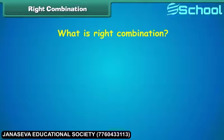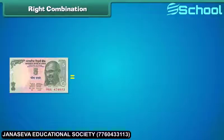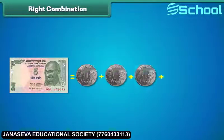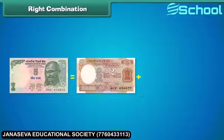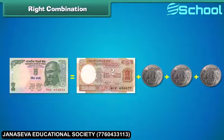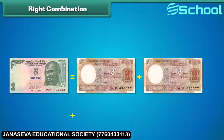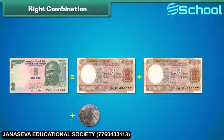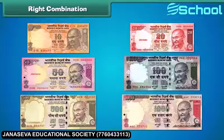Let us learn about some right combinations of notes and coins. One 5 rupee note is equal to the sum of five 1 rupee coins. One 5 rupee note is also equal to the sum of one 2 rupee note and three 1 rupee coins. Similarly, one 5 rupee note is equal to the sum of one 2 rupees note, one 2 rupees note and a 1 rupee coin. All these are the right combinations. Similarly, we can have different right combinations for 10, 20, 50, 100, 500 and 1000 notes.